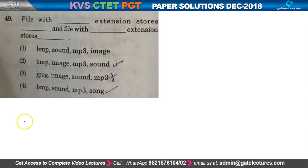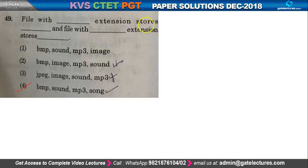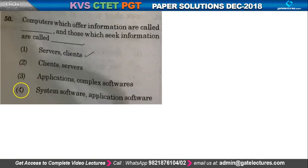Question number 49: a file with which extension stores what? The correct answer is option number 4, because a file with BMP extension stores the image data. So option number 4 is the right one.